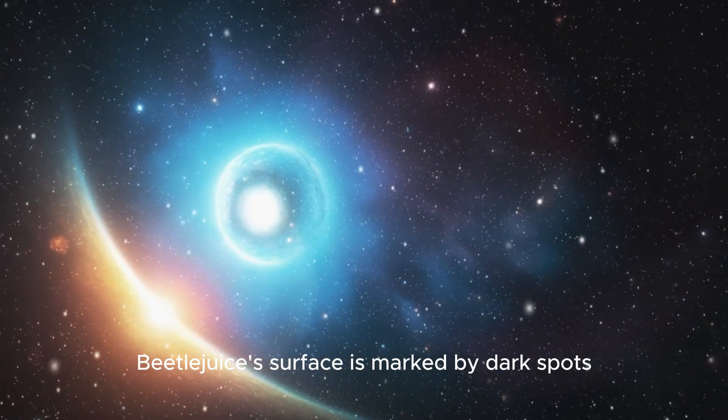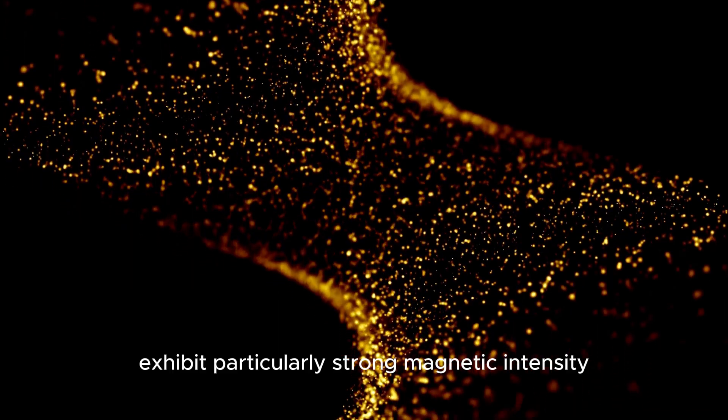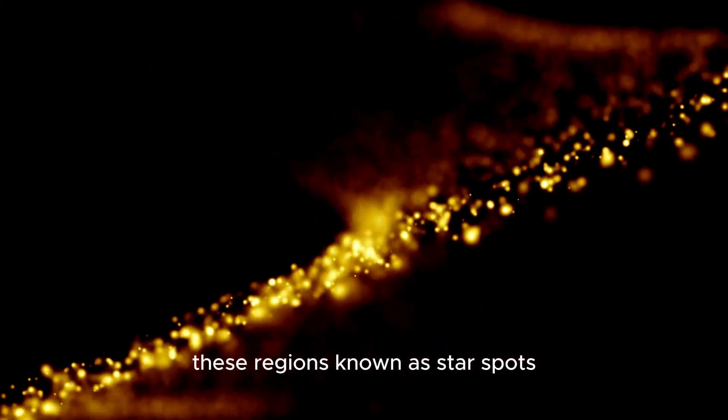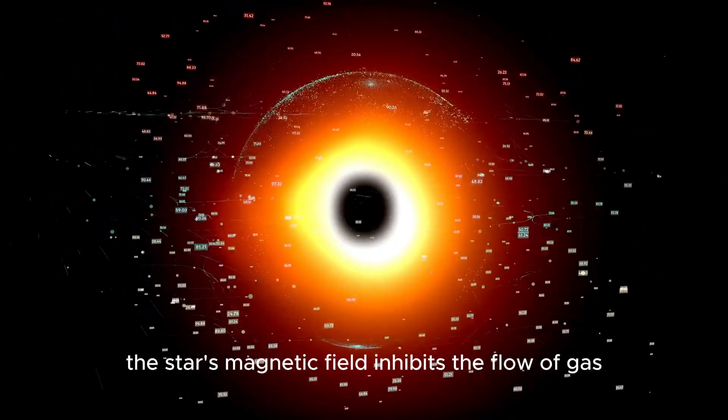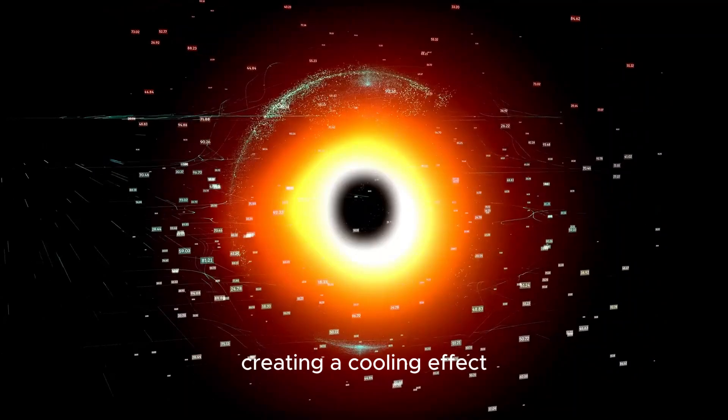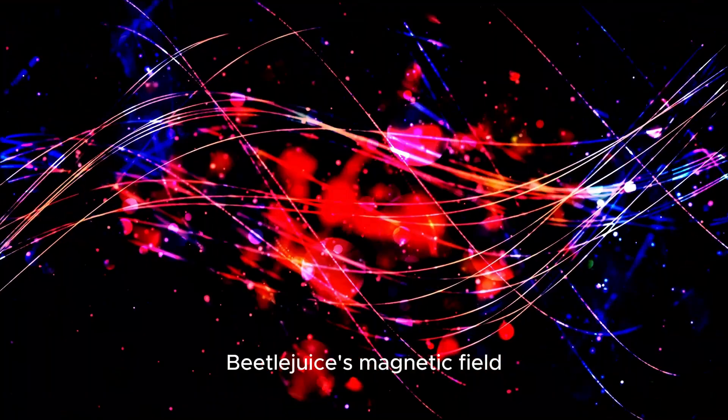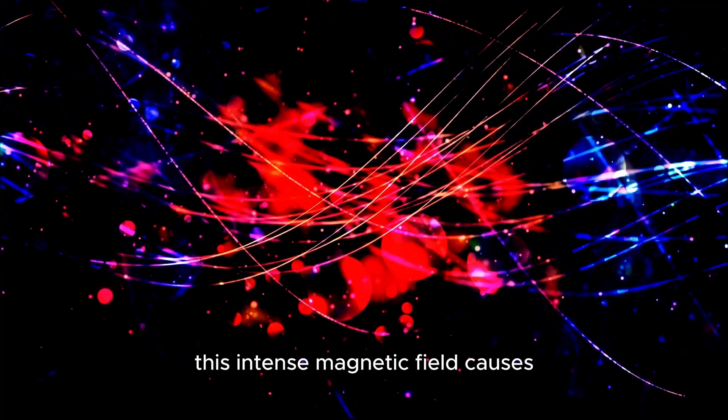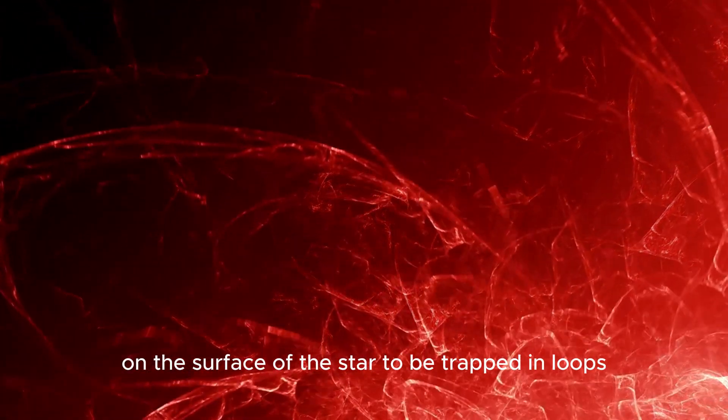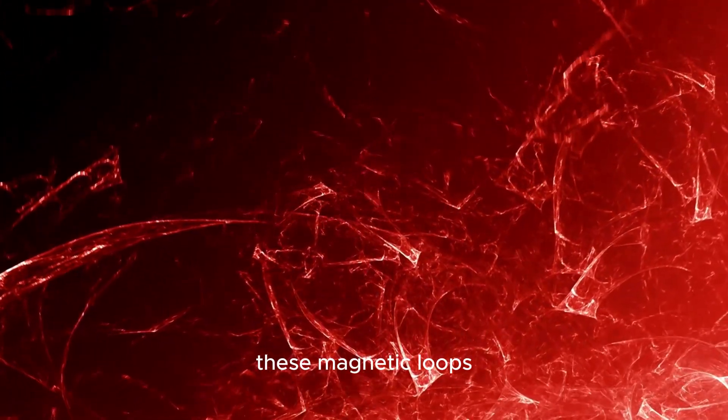Betelgeuse's surface is marked by dark spots, also known as star spots or magnetic spots. These areas on the star's surface exhibit particularly strong magnetic intensity. These regions, known as star spots, are cooler areas on the surface of Betelgeuse. This is because the star's magnetic field inhibits the flow of gas from the interior to the surface, creating a cooling effect. These spots can provide insights into the magnetic activity of massive stars. As a result, the spots appear darker compared to the rest of the surface. Betelgeuse's magnetic field is believed to be thousands of times stronger than that of the sun. This intense magnetic field causes the gas on the surface of the star to be trapped in loops or arcs, describing regions of intense magnetic activity that are visible as star spots.